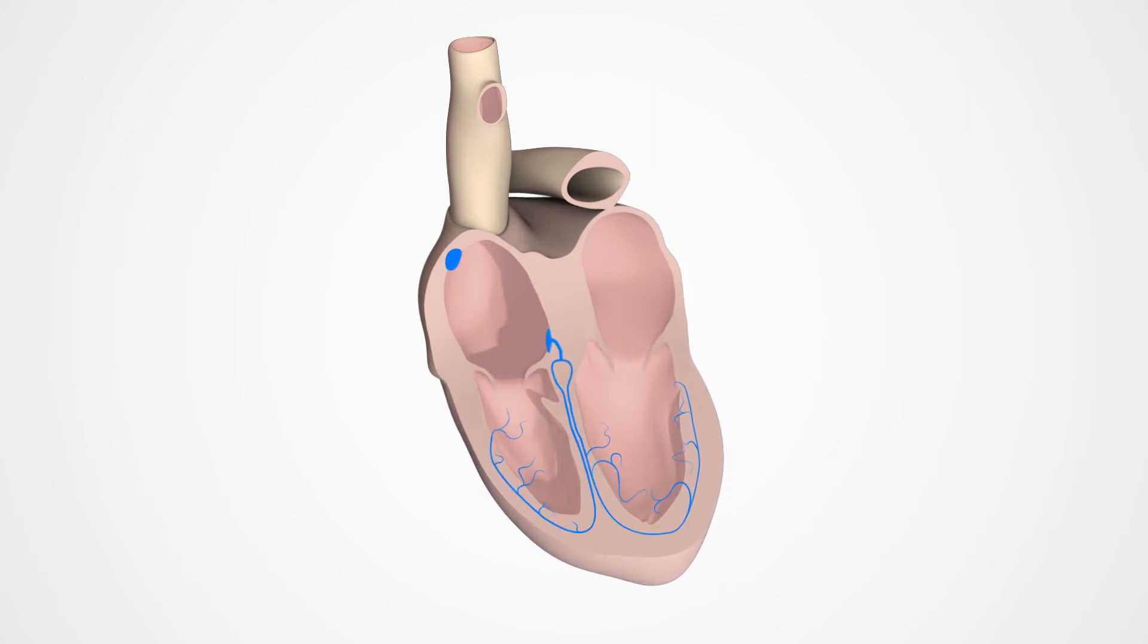After the heartbeat is over, the muscle cells relax and are ready to receive the next signal from the sinus node. Then the cycle starts over again.